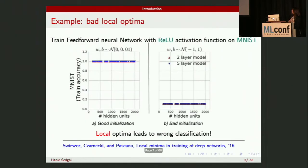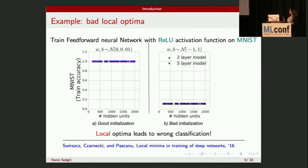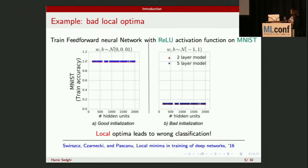Another example which recently came out of DeepMind: consider the MNIST dataset, the dataset of handwritten digits, where the goal is to classify which digit you see. If you want to train a feed-forward neural network with a real activation function, and you look at different initializations — on the left, good initialization gives completely accurate classification, whereas bad initialization can completely ruin your classification accuracy. They did this for a two-layer and a five-layer model, showing that when you start from bad initialization and get stuck in a bad local optimum, it doesn't matter how many more iterations you do.